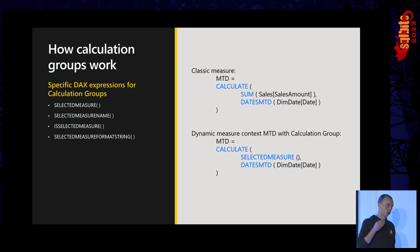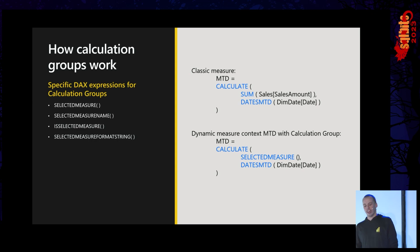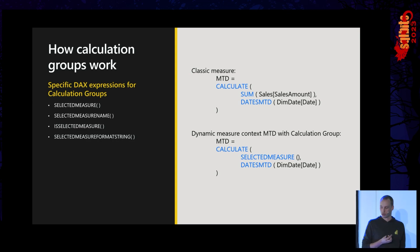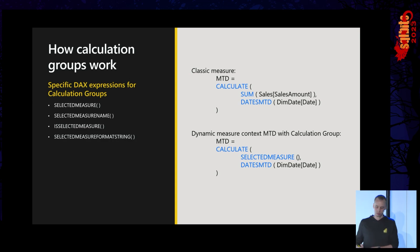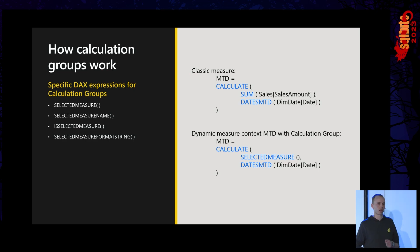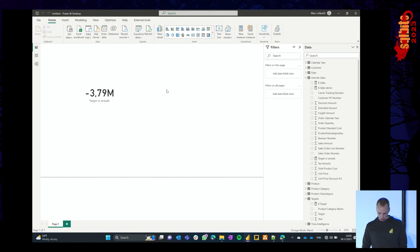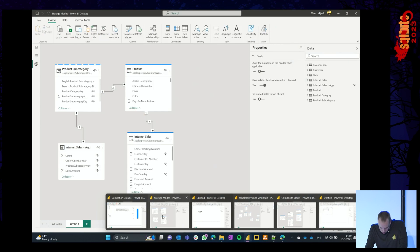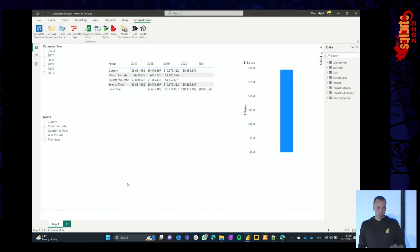Other limitations: object-level security is not possible on top of a calculation group. Smart narratives as a visual are not supported with calculation groups. And a spoiler for what's to come — be aware of potential unexpected behavior of calculation groups when you combine them with composite models. There are four DAX expressions related to calculation groups: SELECTEDMEASURE(), SELECTEDMEASURENAME(), ISSELECTEDMEASURE(), and SELECTEDMEASUREFORMATSTRING(). You define the logic once — instead of hard-coding SUM of sales amount, you use SELECTEDMEASURE() — and the calculation group applies that logic to whatever measure is placed in context.